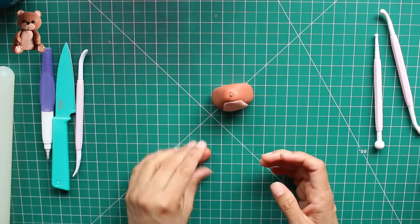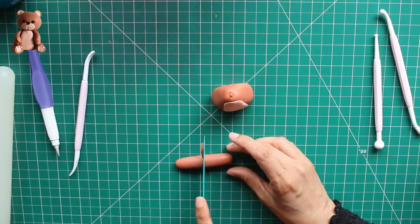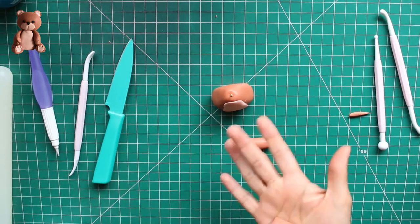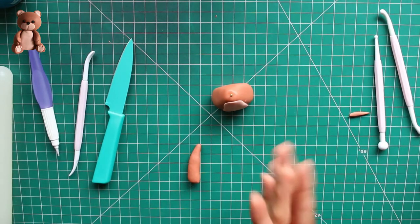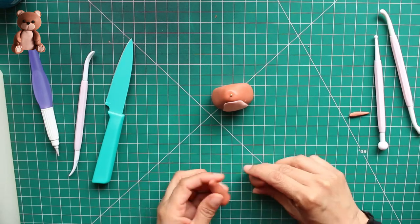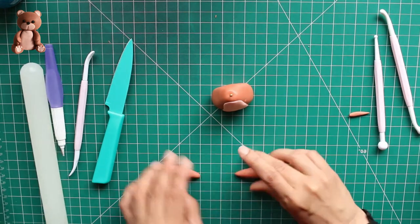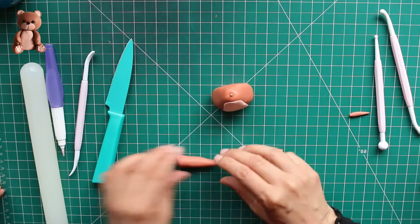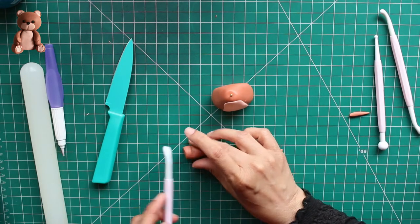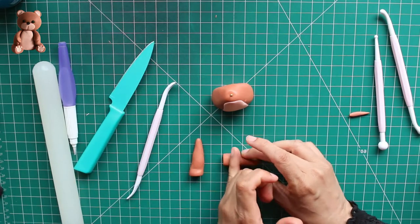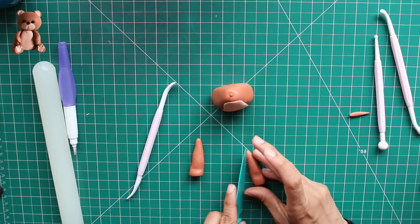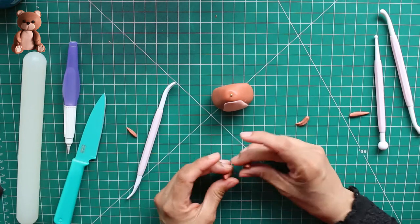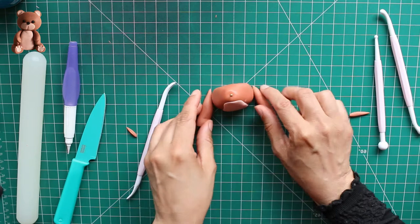Now for the legs, roll the gum paste into a sausage shape, cut it into half and make one end small and the other end is wide, like a cone shape but more pointy. So the wider end is going to be the paws and make some indentations close to the paws to give them some shape, cutting the edges so that they fit nicely on the side of the body.